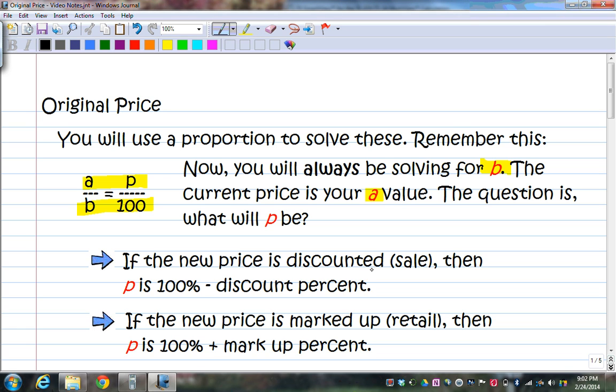if the new price is discounted or a sale, then the p value is going to be 100% minus the discount. So one way to think of it is, a discount is subtracted because you always subtract the discount. And what are we subtracting it from? From 100. They're either going to be added to 100% because 100% represents the original price you're trying to find. So it's either going to be added to 100% or subtracted from 100%. Discounts are subtracted. And then markups are added. So a markup is added to the 100%.